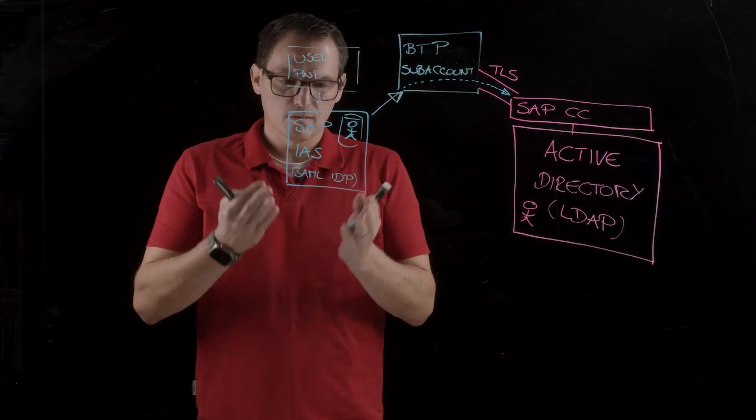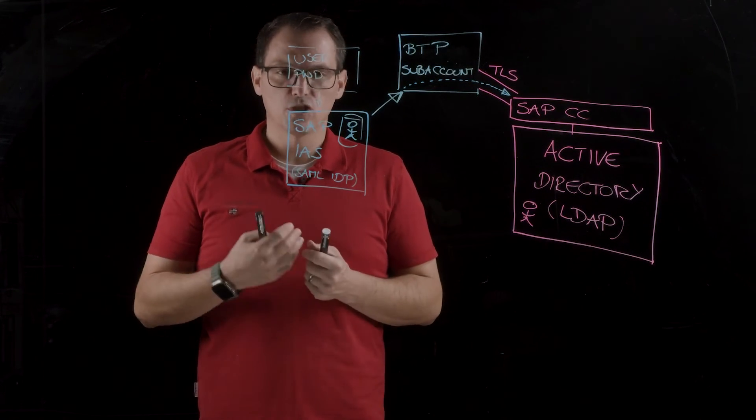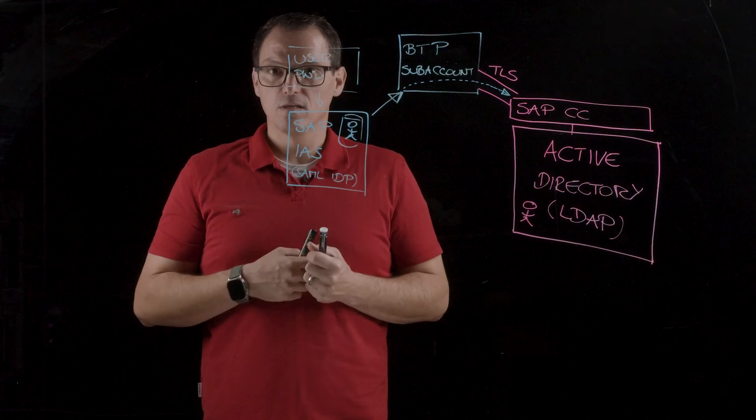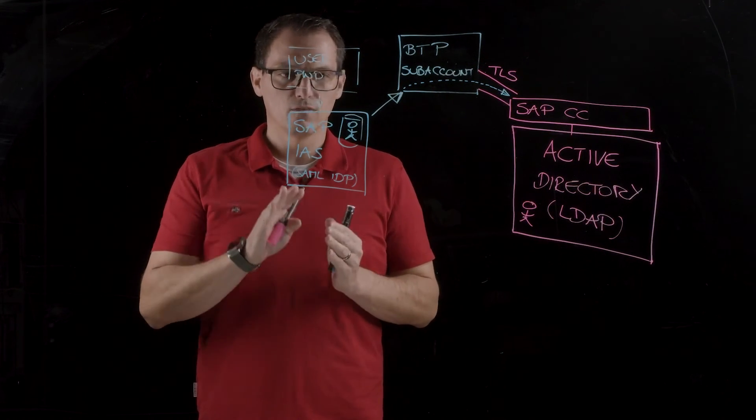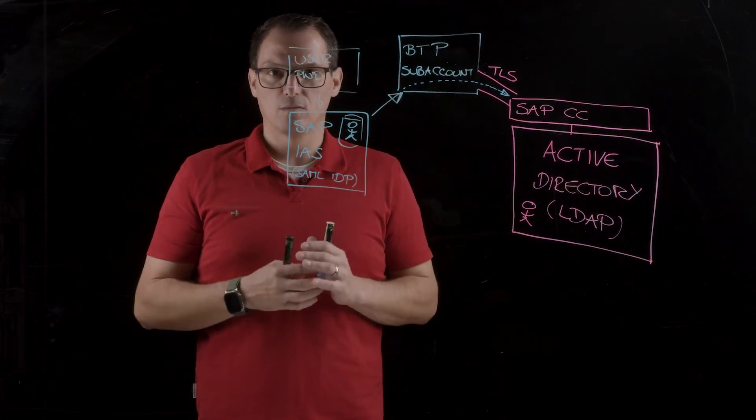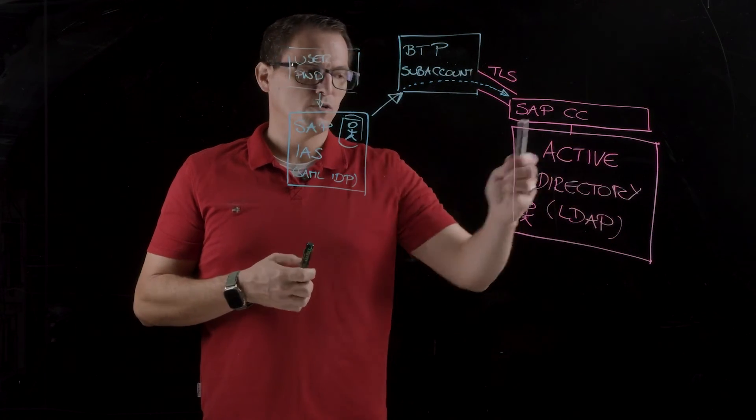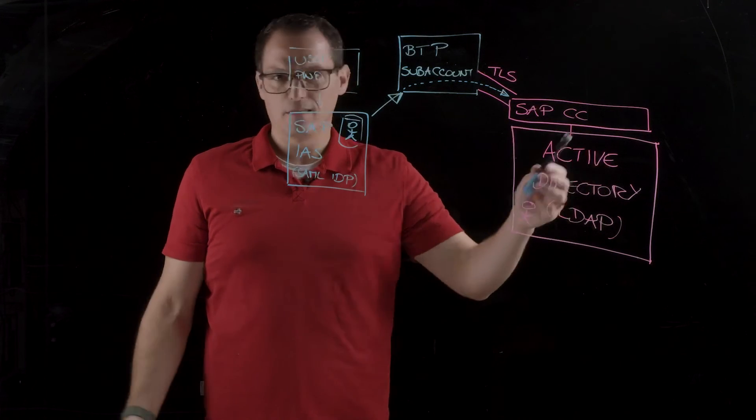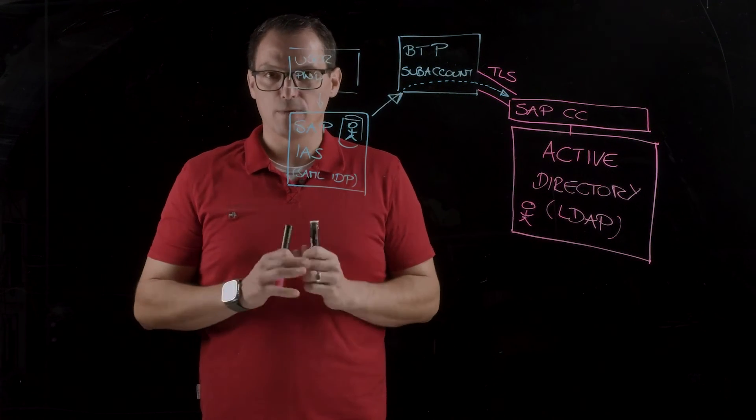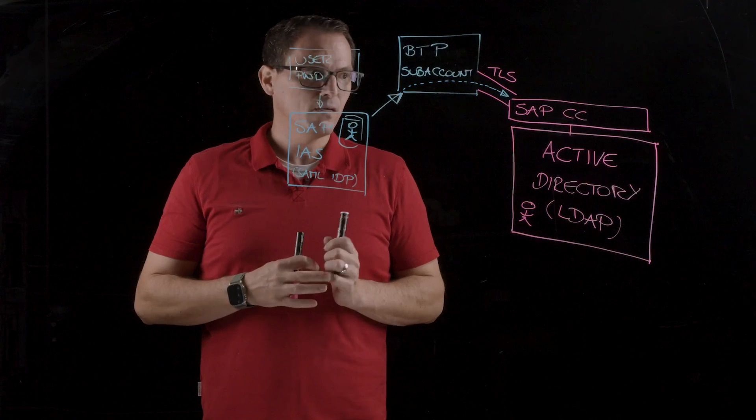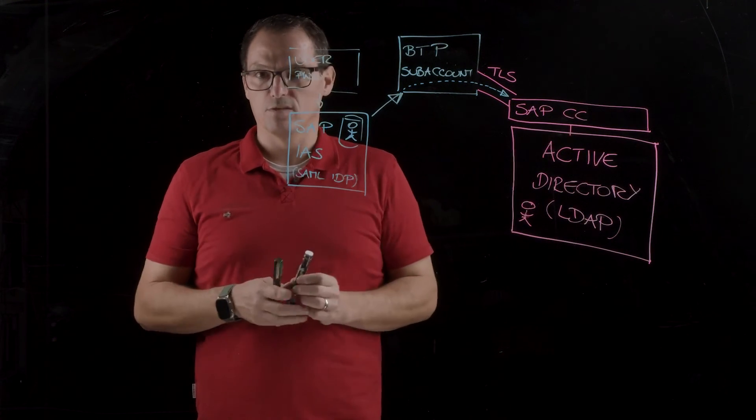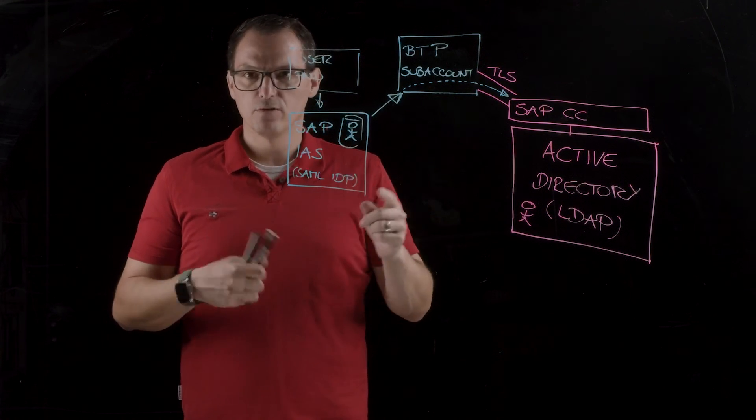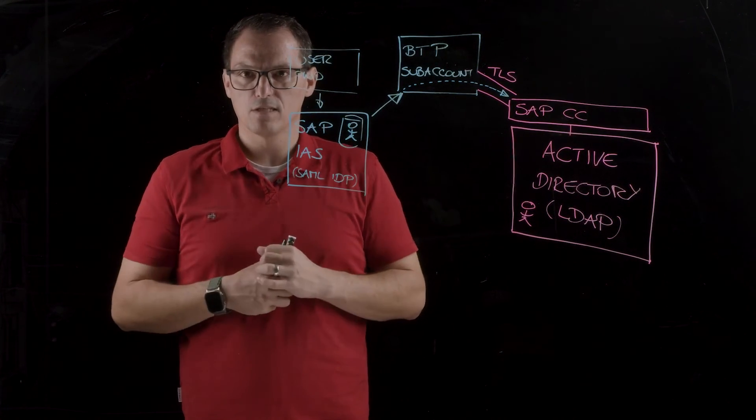Yeah, and that's another advanced feature of the identity authentication service that you can use in your landscape to make the authentication even more easier and use common technologies that you are familiar with, like the Active Directory. And you don't have to reinvent everything or anything. You have everything already in place here and you can just reuse it. And the configuration here is just a few clicks and that's it more or less.